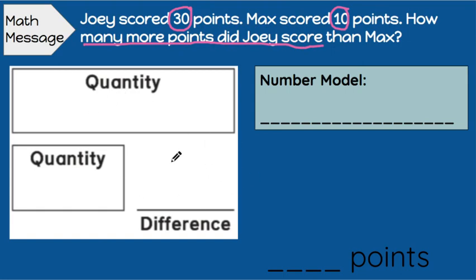So if we're trying to find the difference between these two numbers, let's start by putting our biggest quantity at the top, 30 points. And I'm going to write the abbreviation for points is PTS, period. And then Max's score is 10 points. Now do we know the difference between them yet? We do not. So what are we going to put? We're going to put a question mark.